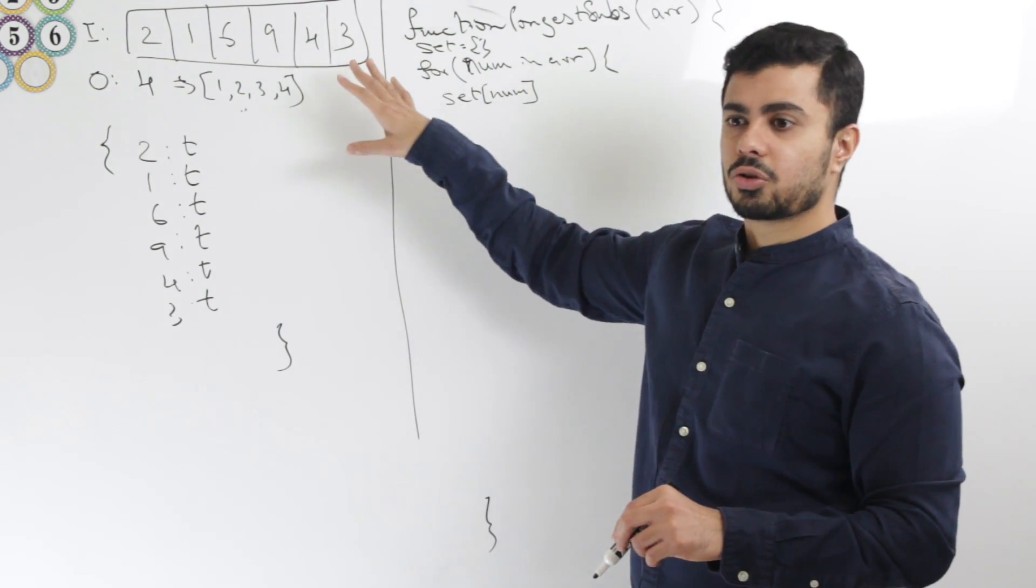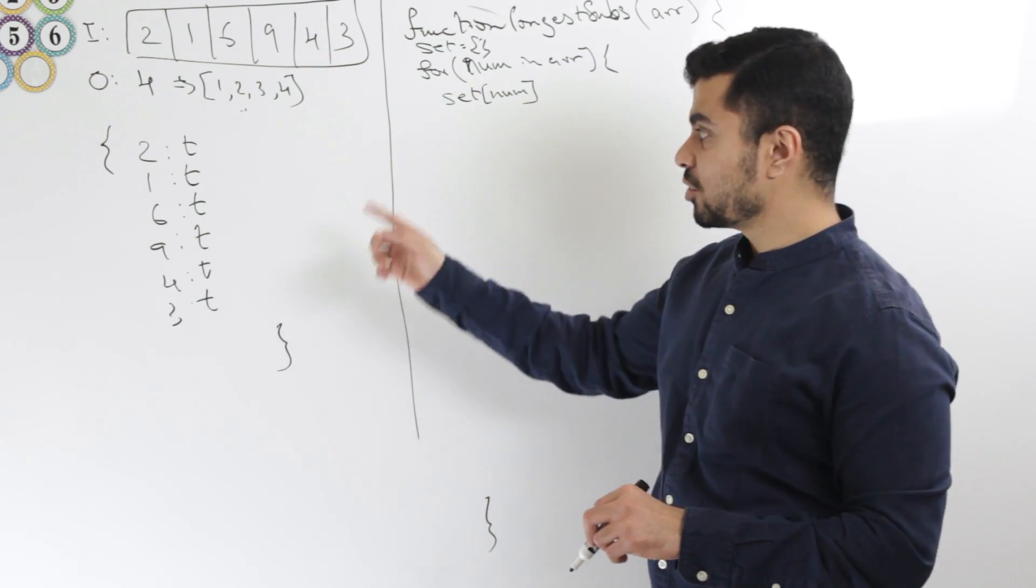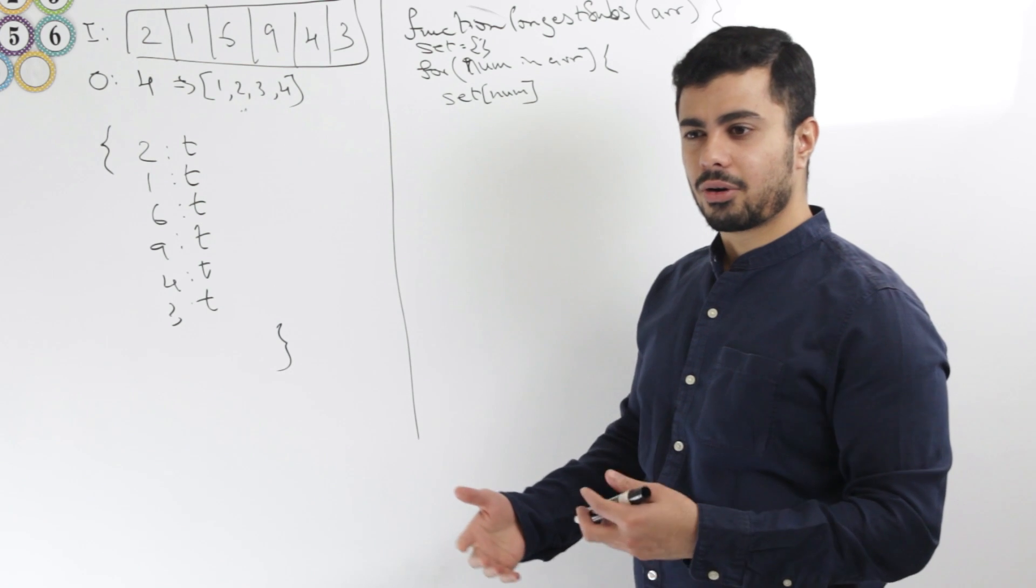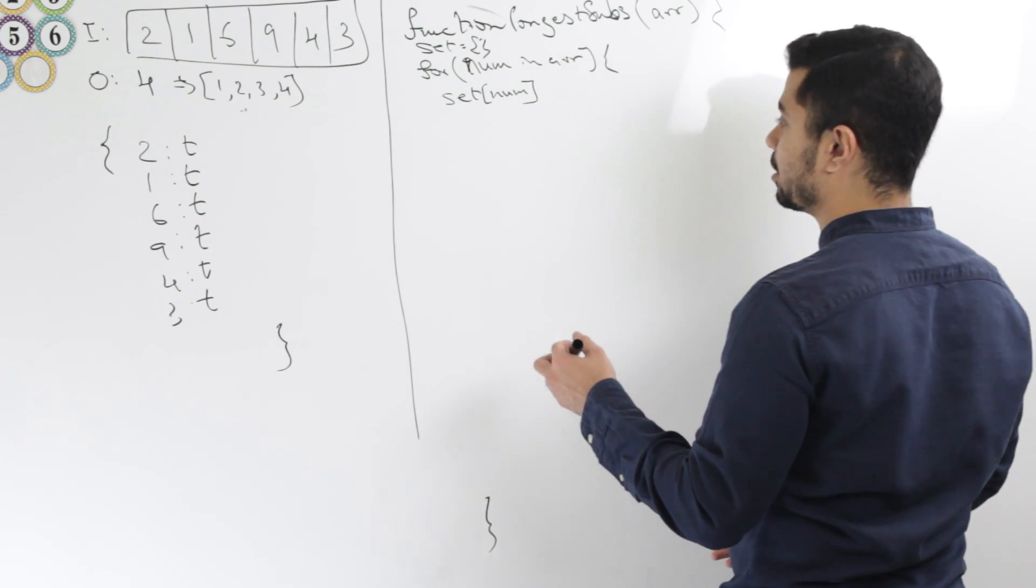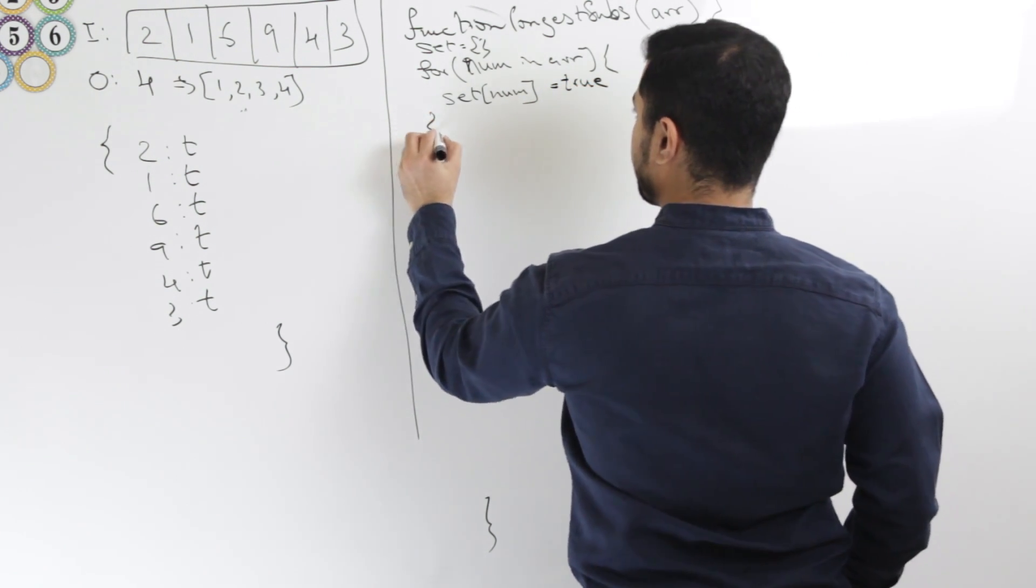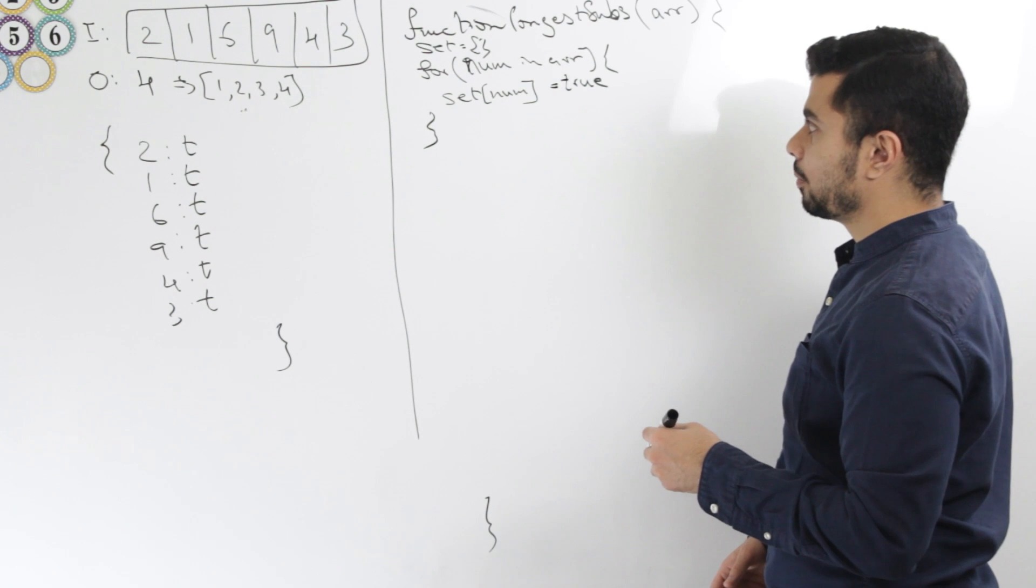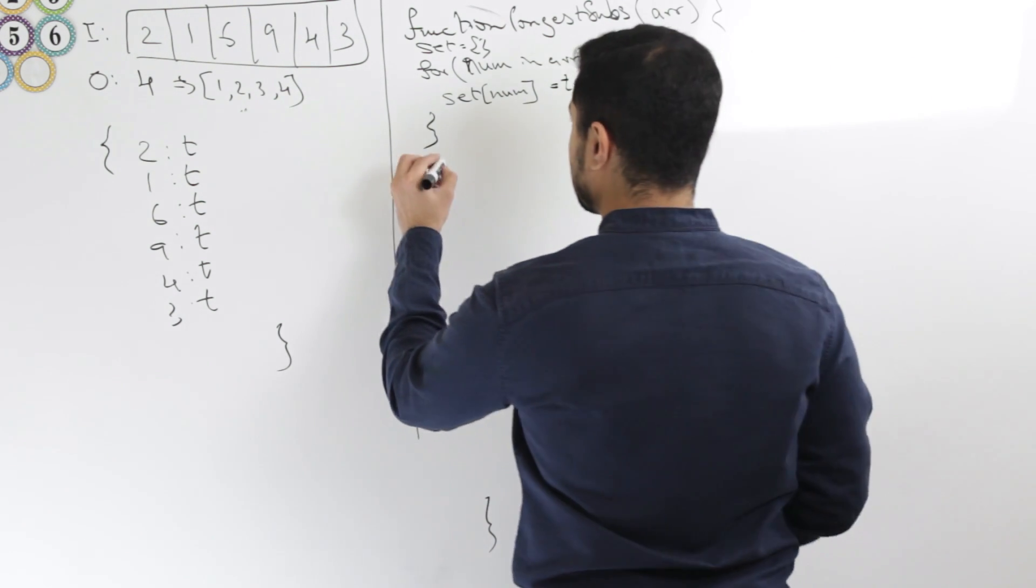That's not the only one. I also want to make sure that the time complexity doesn't go into quadratic. For each element, I don't want to iterate over the entire array, just to find it. So I'll say set num equals true.